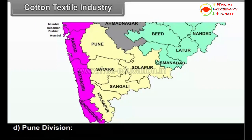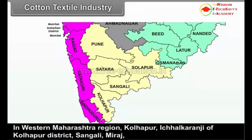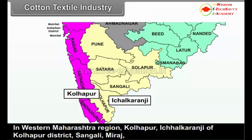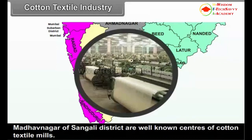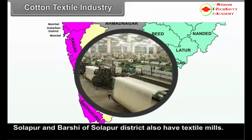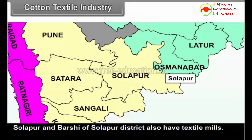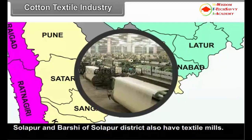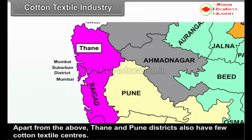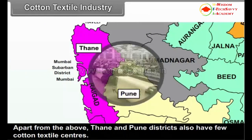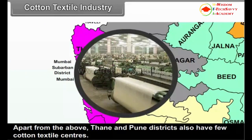D. Pune Division: In western Maharashtra region, Kolhapur, Ichalkaranji of Kolhapur district, Sangli, Miraj, and Madhavnagar of Sangli district are well-known centres of cotton textile mills. Solapur and Barshi of Solapur district also have cotton textile mills. Apart from the above, Thane and Pune districts also have a few cotton textile centres.